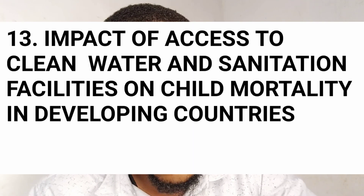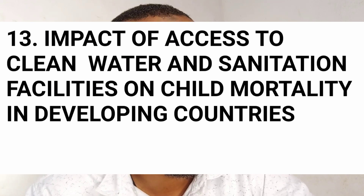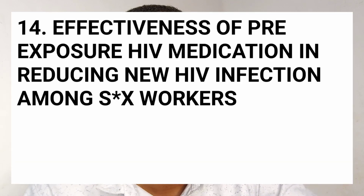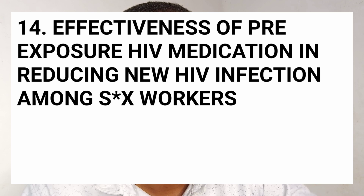Number thirteen: impact of access to clean water and sanitation facilities on child mortality in lower-income countries. Number fourteen: effectiveness of pre-exposure medication (PrEP) in reducing new HIV infections amongst workers. Most workers use PrEP because this medication prevents them from getting an HIV infection. How effective is it, and does it provide longer protection against new HIV infections in this particular group?